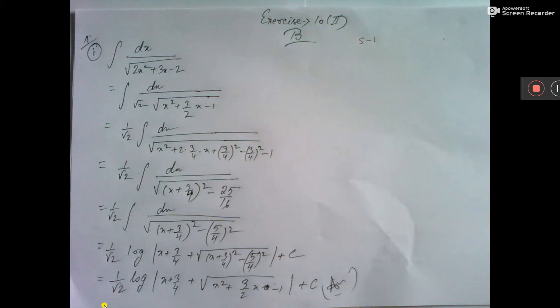This shows how I have taken root 2 common. Then here, this is b, so we have x, a squared plus 2ab plus b squared.